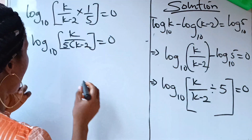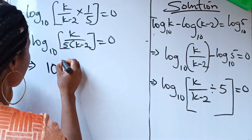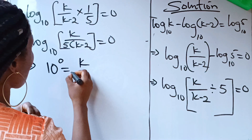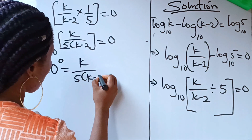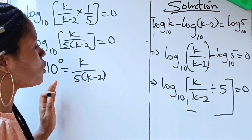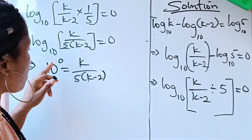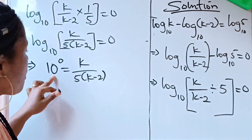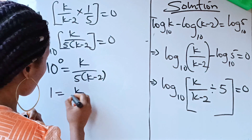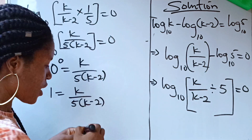So this implies that 10 raised to the power of zero equals k over 5 times (k minus 2). Any number raised to the power of zero is 1, except zero. So 10 raised to the power of zero is 1, meaning we can write: 1 equals k all over 5(k minus 2).